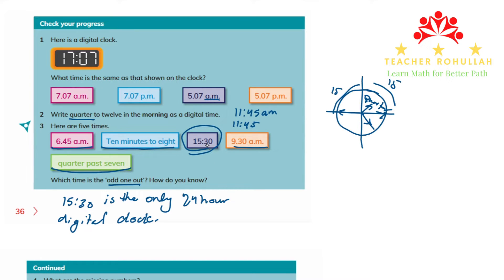One reason is that 15:30 specifically shows afternoon time, and the other reason is that it is the only 24-hour digital clock among the five. Question three is solved.